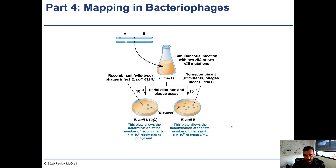You use these plates to calculate the total number of phages — on the order of 8 times 10 to the ninth. Then you can calculate how often recombinants occur. What you're looking at is something that occurs very, very rarely: 10 to the third divided by 10 to the ninth — so it's one out of a million. It only occurs one out of a million times.